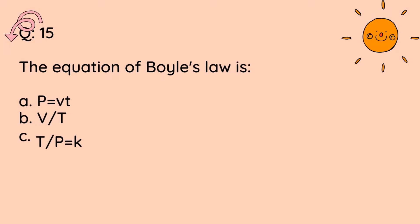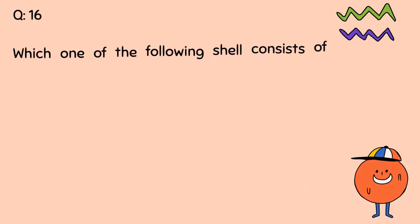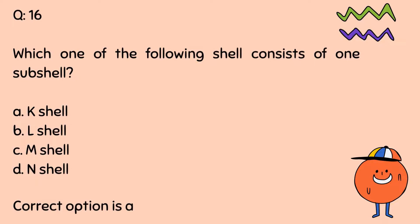Question number 15. The equation of Boyle's Law is: A, P equals VT, B, V by T equals K, C, T by P equals K, D, PV equals K. Correct option is D. Question number 16. Which one of the following shell consists of one subshell? A, K shell, B, L shell, C, M shell, D, N shell. Correct option is A.